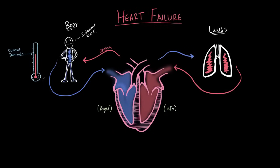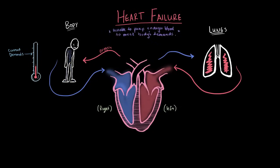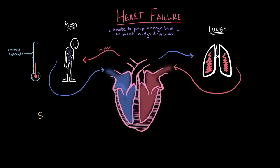Heart failure describes the condition where the heart can't meet the demands of the body — at any given time, the heart is not able to pump enough blood to meet those demands. There are essentially two types of heart failure. The first is systolic heart failure, and systolic refers to systole, which is the phase of the cardiac cycle where blood is pumped out of the heart.